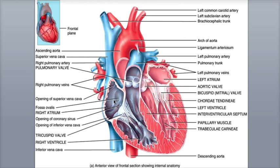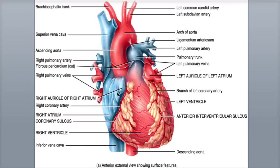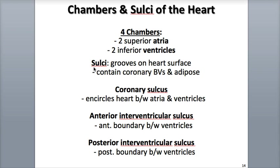The heart contains four chambers: two superior chambers called atria — the left atrium and the right atrium — that receive blood returning to the heart from veins, and two inferior chambers called ventricles — the left ventricle and the right ventricle — that pump blood out of the heart into arteries. On the anterior surface of each atrium is an ear-like pouch called an auricle. The left and right auricles help increase the volume of blood that each atrium can hold.